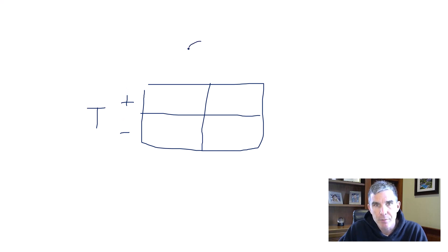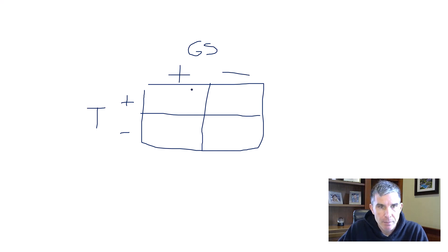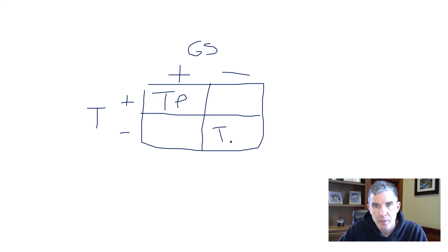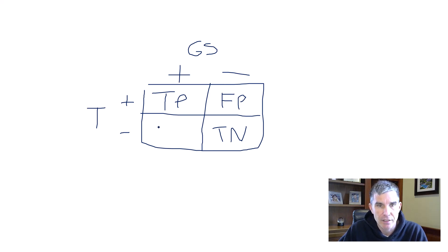Along the top of the table, you have the gold standard. If we had some gold standard for diagnosing PE, we would have patients who either have PE by the gold standard or patients who do not. Once we set up this table, up here we have true positives — patients who are positive by the screening test and positive by the gold standard. Down here we have true negatives. Up here we have false positives — patients who screen positive but don't have the condition by the gold standard. And down here we have false negatives.